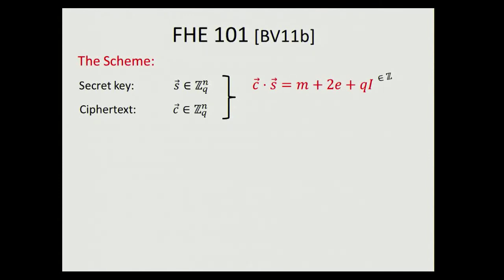Taking this inner product mod Q gives you M plus a small even number. How do we get ciphertexts that adhere to this equation? If you've seen it before, you know; if not, just believe that it's possible and can even be done in a public-key way—you don't need to know the secret key in order to encrypt message M such that this equation holds.